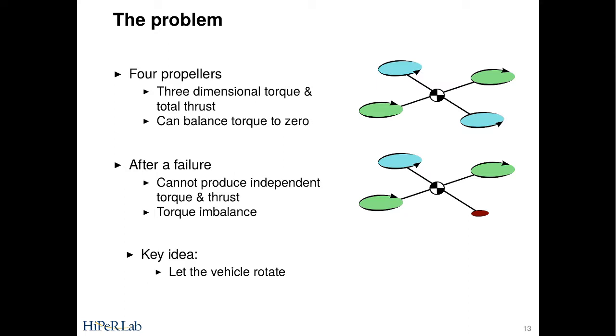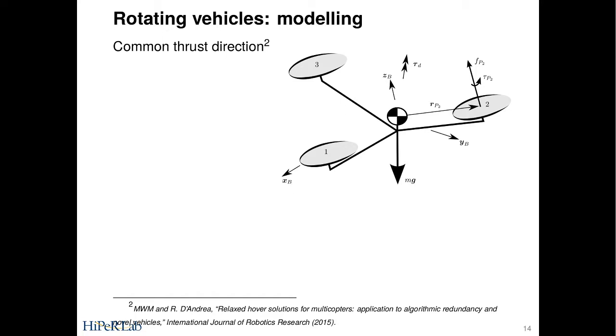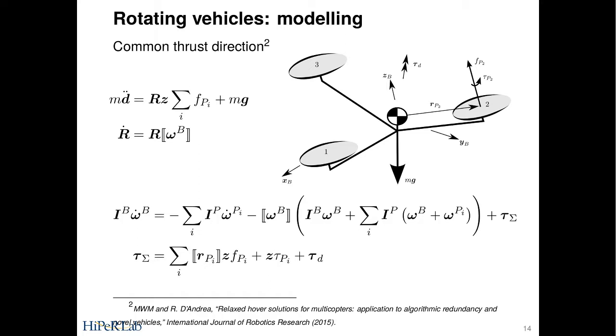If you have any kind of vehicle where you have some arbitrary number of propellers that all point in the same direction, so all of these have parallel thrust directions, they can rotate with different handedness, but they must be parallel. In this case, you can write down the dynamics equations. These are exactly the same as we had with the quadcopter, except now you have some arbitrary number of propellers that you need to sum over.